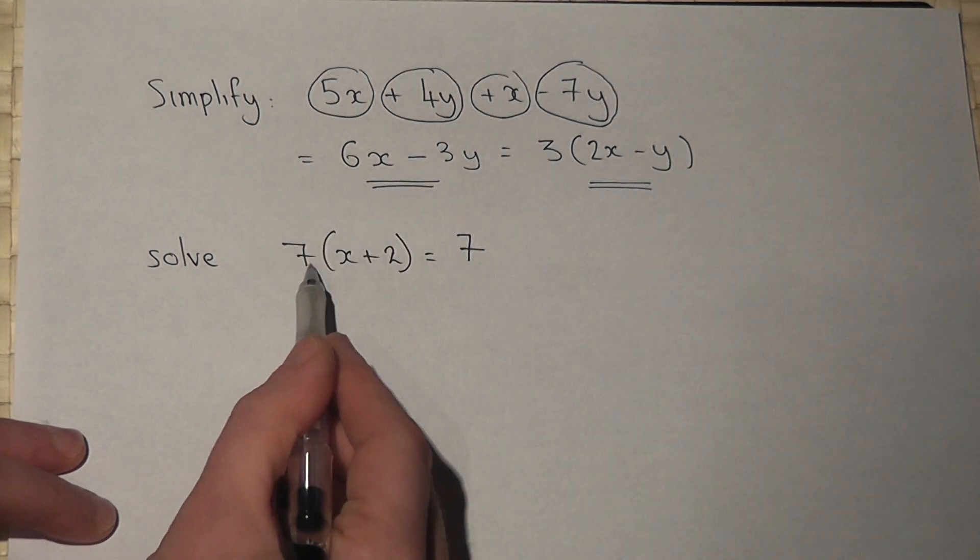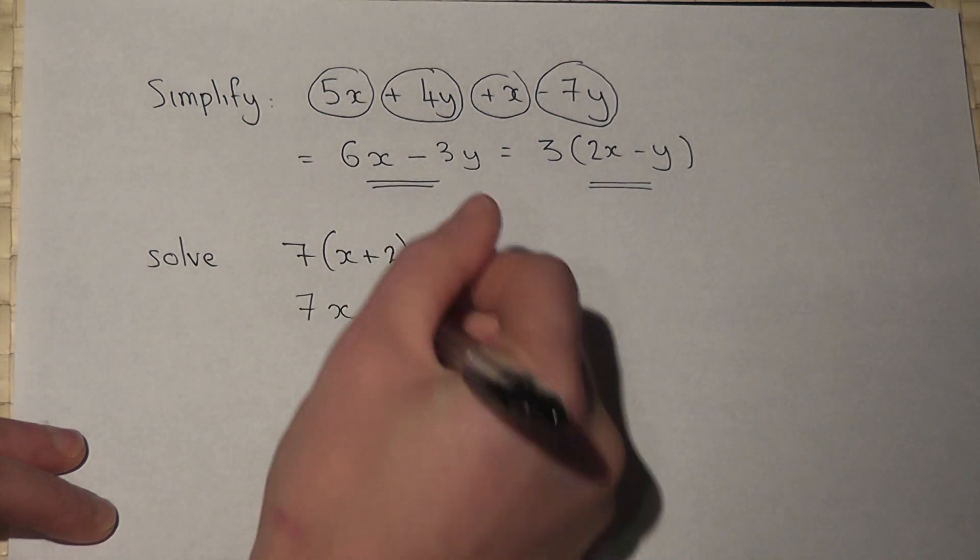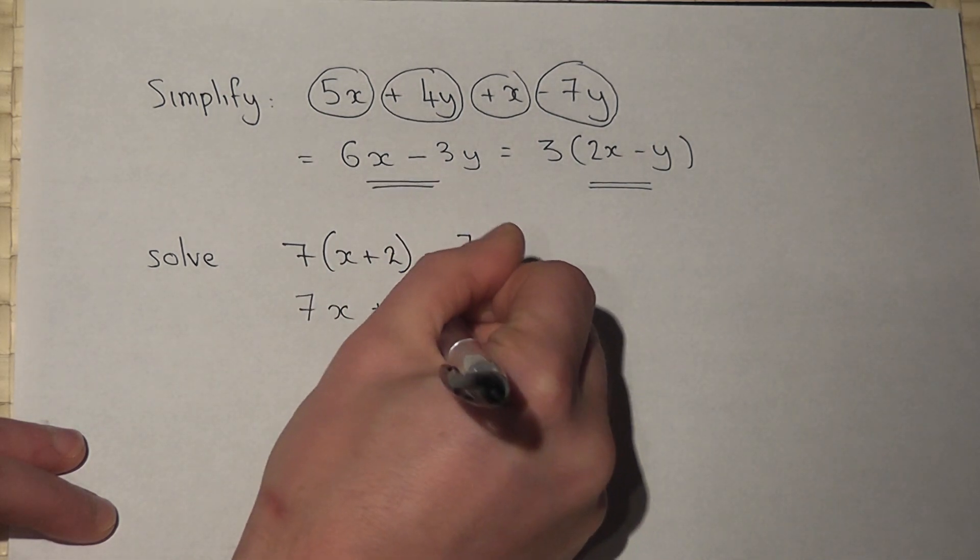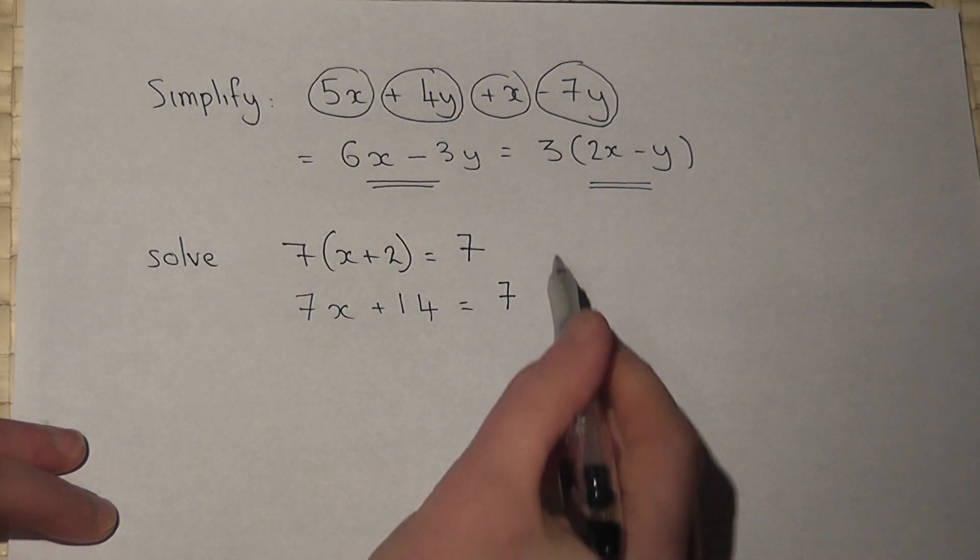So if I expand this, 7 times x is 7x, 7 times 2 is plus 14, and this just equals 7. So I began by expanding.